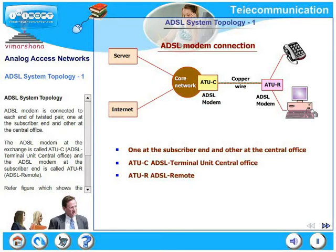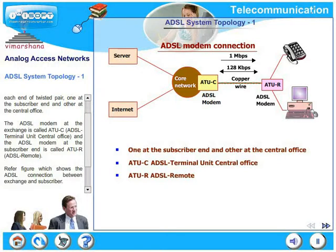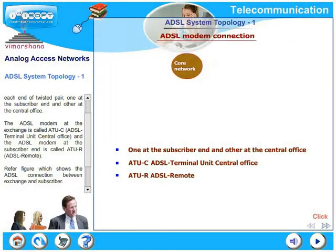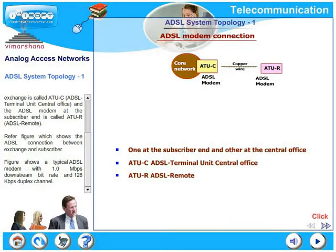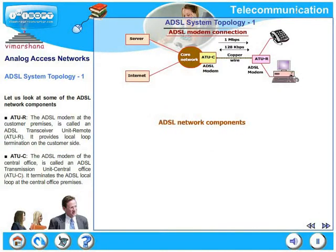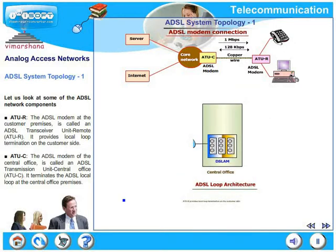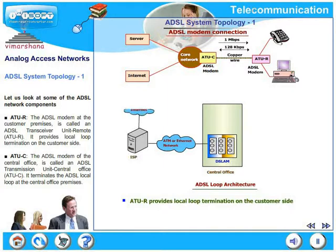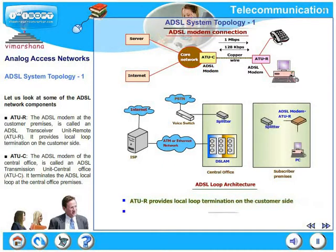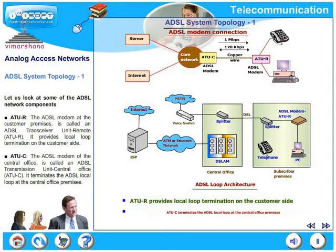This shows a typical ADSL modem with 1 Mbps downstream bitrate and 128 kbps duplex channel. The ADSL modem at the customer premises is called ADSL Transceiver Unit Remote, ATUR. This provides local loop termination on the customer side. The ADSL modem at the central office, ATUC, stands for ADSL Transmission Unit Central Office, and it terminates the ADSL local loop at the central office premises.